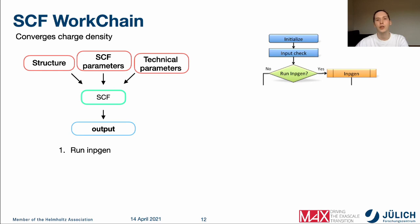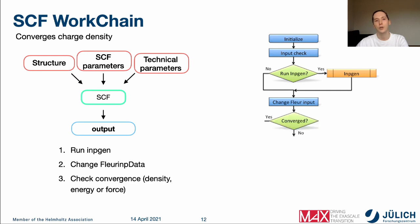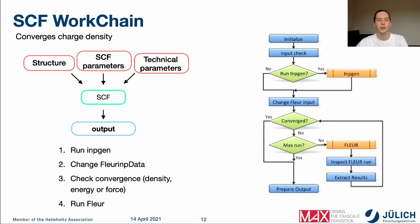The self-consistent work chain can be considered as a black box which accepts a structure and configuration parameters in order to converge the charge density and calculate the total energy of the structure. First, using an inp.gen calculation it converts the provided structure to the FloorInpData type. Then it modifies it as needed, and checks if the calculation was converged. Since zero iterations have been performed initially, it submits Floor calculations to converge the charge density, repeating this loop until convergence. In the end, we have an output dictionary with the total energy and folder data with the charge density.